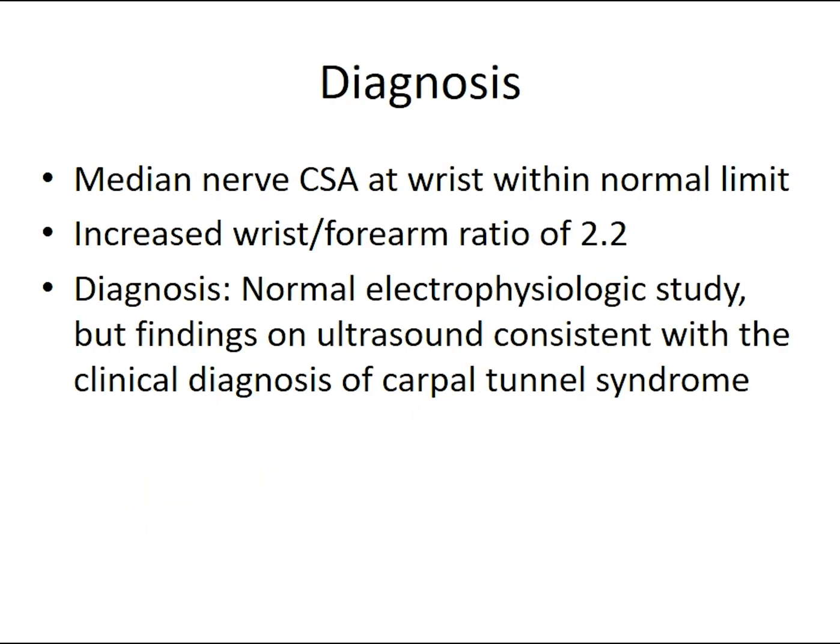We have a median nerve cross-sectional area at the wrist that is within normal limits, but the wrist-to-forearm ratio is actually enlarged at 2.2. Our lab has a normal value of 2 or less, so a ratio greater than 2 is abnormal. Based on this, we were able to say that despite the normal electrophysiologic study, the findings on ultrasound are consistent with the clinical diagnosis of carpal tunnel syndrome. The additional use of ultrasound was very helpful in this case.